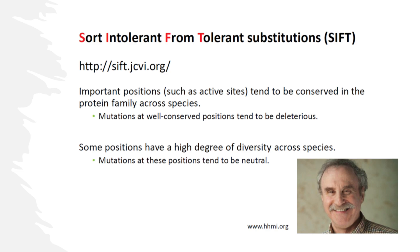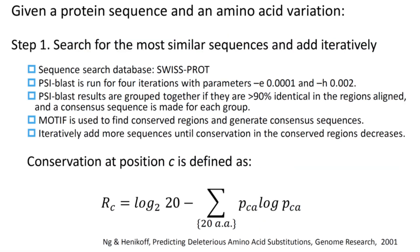So how would you implement this nice intuitive idea computationally? SIFT takes a multi-step procedure. Given a protein sequence and an amino acid variation, in step 1, SIFT searches the SwissProt database for similar protein sequences using four iterations of PSI-BLAST with parameters E set to 0.0001 and H set to 0.002. PSI-BLAST results greater than 90% identical in the aligned regions are grouped together, and a consensus sequence is made for each group. The motif method is used to find conserved regions and generate consensus sequences, and iteratively more similar sequences are added until conservation in the conserved regions decreases.